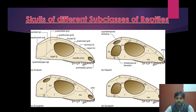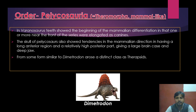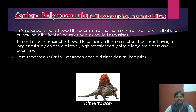The order Pelicosauria, also called Theromorpha or mammal-like reptiles, is an important group. In Varanosaurus, teeth showed the beginning of mammalian differentiation, in that one or more teeth near the front of the series were elongated as canines.